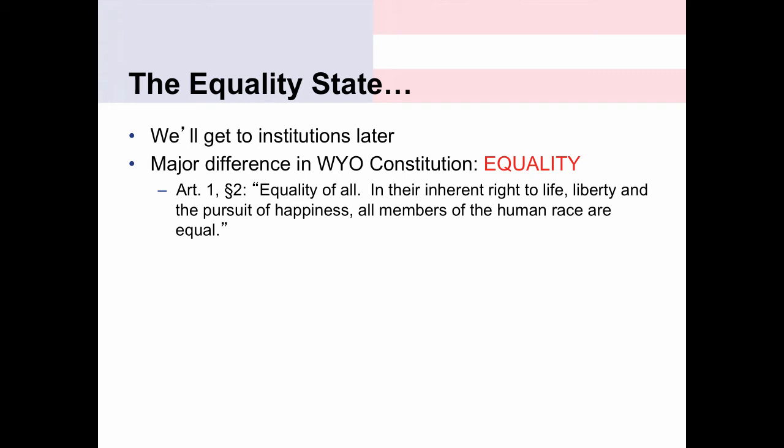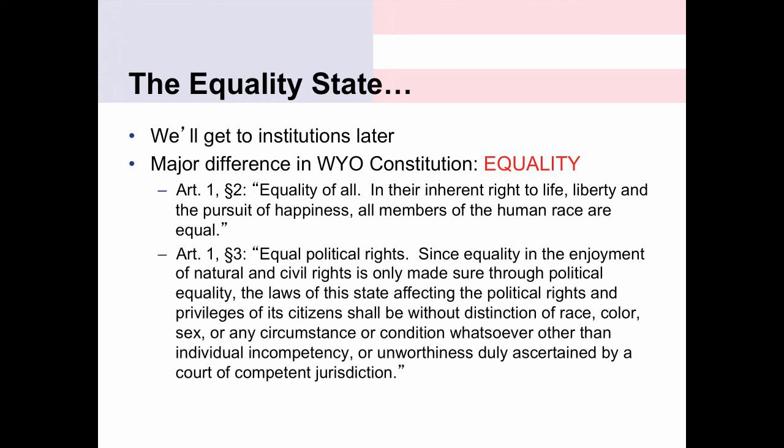Article 1, Section 2 says: 'Equality for all. In their inherent right to life, liberty, and the pursuit of happiness, all members of the human race are equal.' Article 1, Section 3 says the laws of the state affecting political rights and privileges shall be without distinction of race, color, sex, or any circumstance or condition whatsoever. Think about how unequivocal that statement is — written in the late 1800s, just decades after the Civil War, when women and racial minorities did not have full equality.